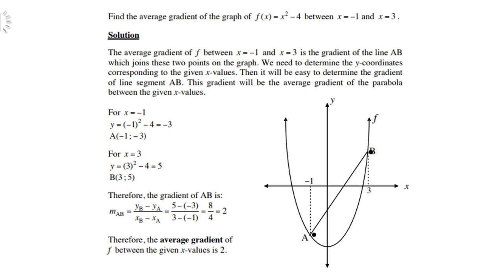We use the gradient formula from analytical geometry: change in y over change in x. That gives us (5 - (-3)) / (3 - (-1)). Remember you are allowed to switch them. That gives you 8 over 4, so therefore 2. Look at the direction of AB — it is in a positive direction, so the average gradient between A and B is therefore 2.